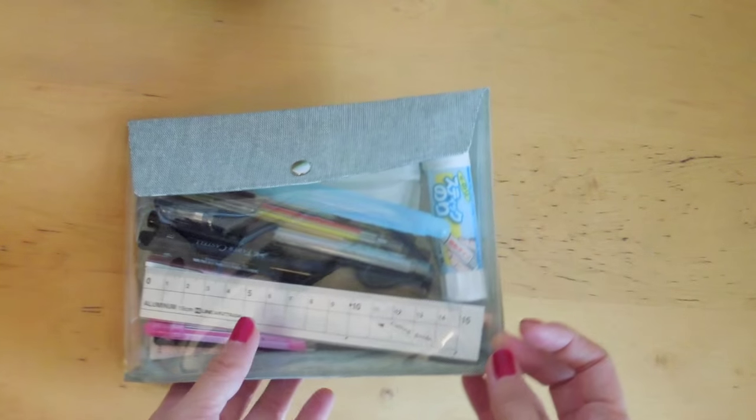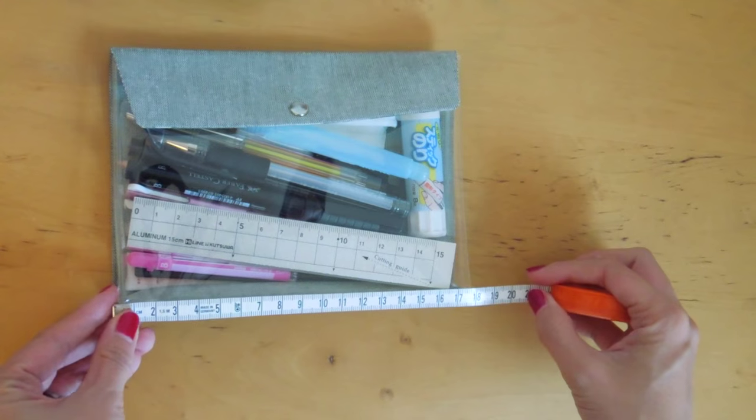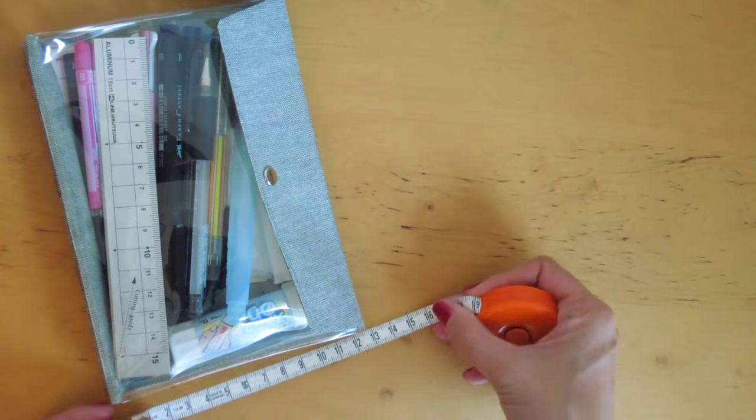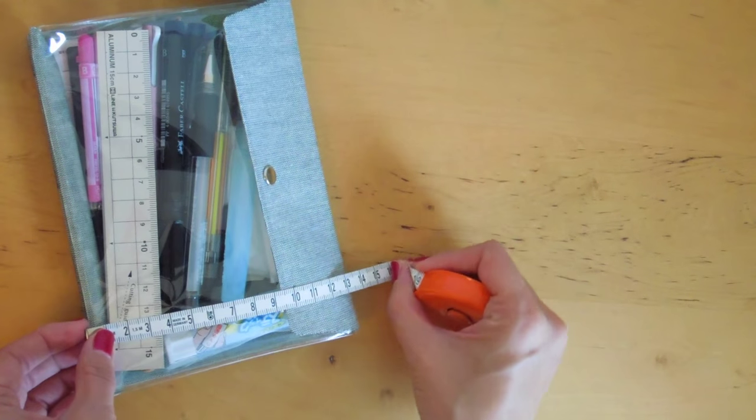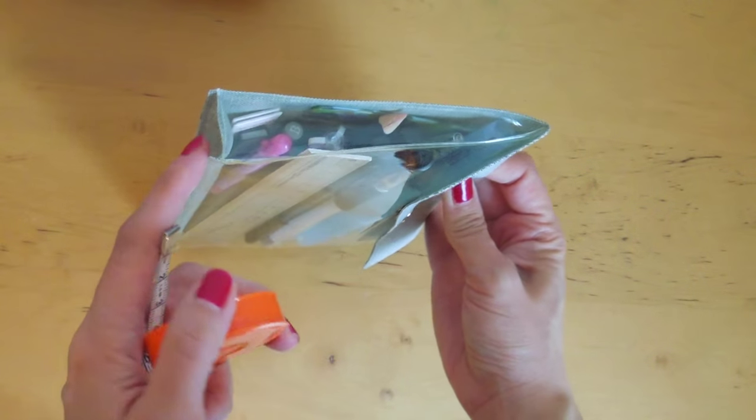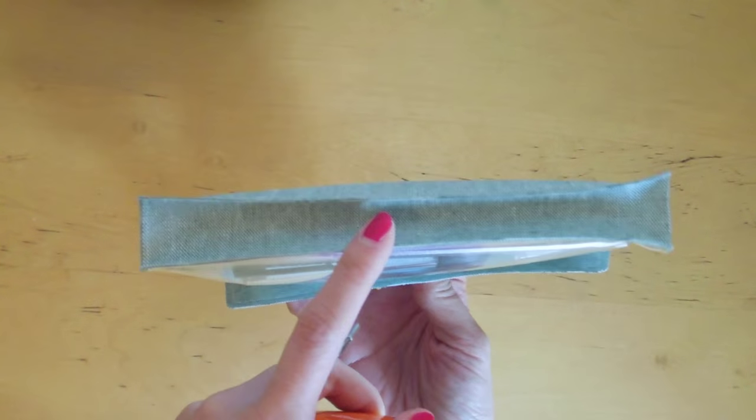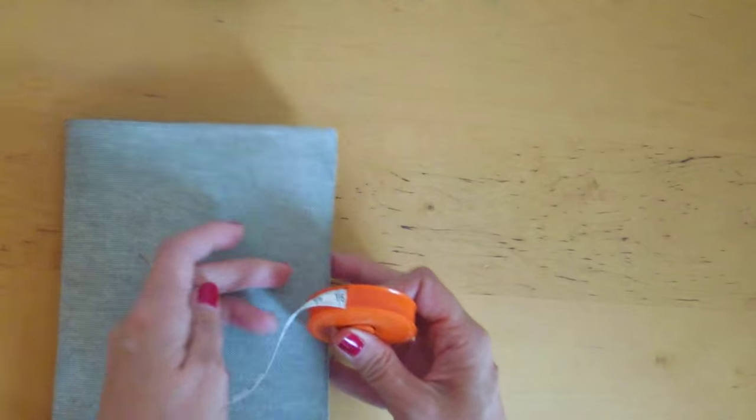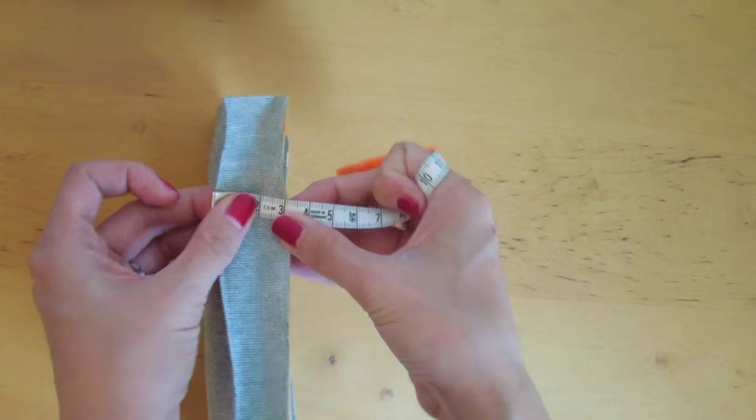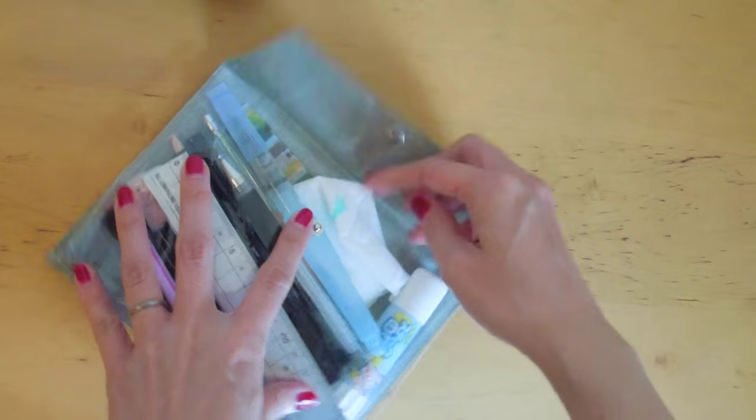Let me just see the measurements here. It is about 17.5 cm by 13.5 cm, and it is gusseted at the bottom here so it's not flat. There is a bit of depth here, about 3 cm. It just has a snap closure.